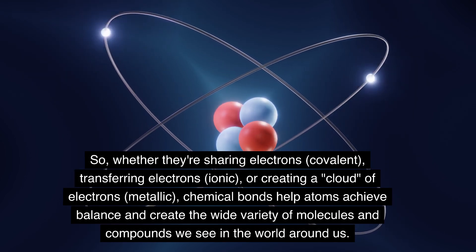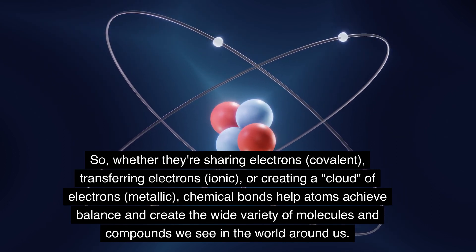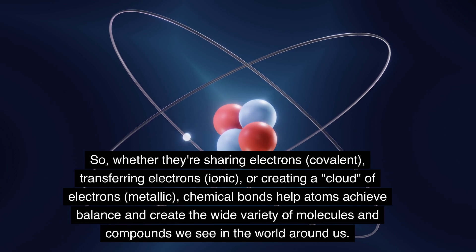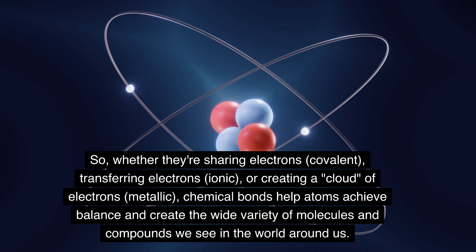So, whether they're sharing electrons (covalent), transferring electrons (ionic), or creating a cloud of electrons (metallic), chemical bonds help atoms achieve balance and create the wide variety of molecules and compounds we see in the world around us.